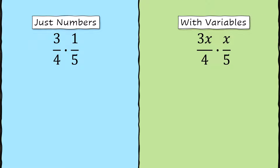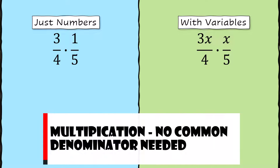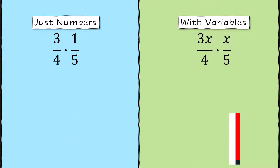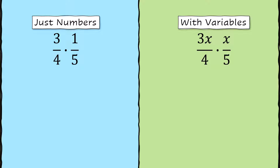Let's talk about multiplication of fractions first, because that's actually the easiest one. I'm going to show you how it's done with just numbers, and then with variables. So let's look at 3 fourths times 1 fifth. You just multiply the numerators and multiply the denominators — it's exactly how you wish all fraction operations worked. So 3 times 1 and 4 times 5 gives an answer of 3 over 20.